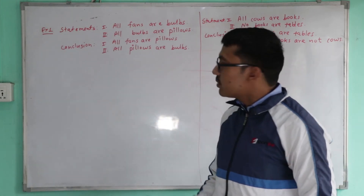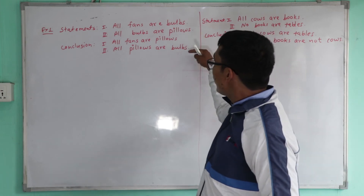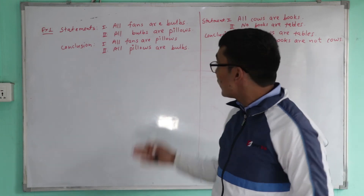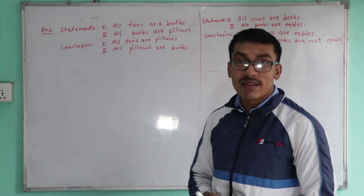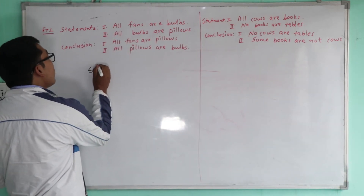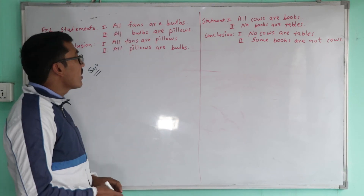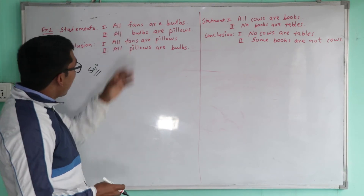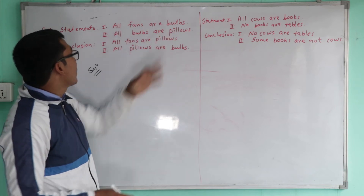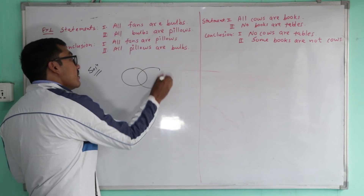This is the format — you read the option, and if the two statements are true, then you evaluate whether the conclusions are logical deductions. In the first step, I will make a Venn diagram and add the elements.